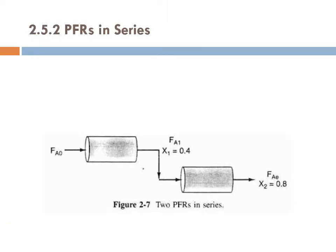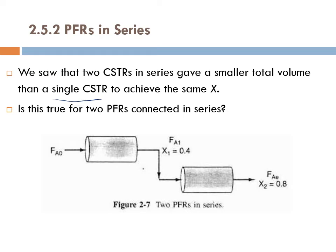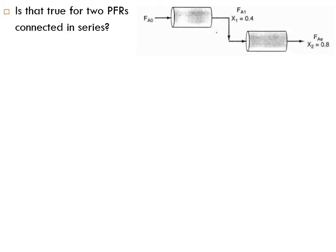Now let's go to plug flow reactors in series. We saw that two CSTRs in series gave a smaller total volume than a single CSTR for the same conversion. When we had a single CSTR the required volume was around 6.4 cubic meters to achieve 80% conversion, but two CSTRs in series gave around 4 cubic meters. Is this also true for two plug flow reactors connected in series? Will the total volume of two PFRs in series be smaller than one PFR? That's the question we'll answer today.